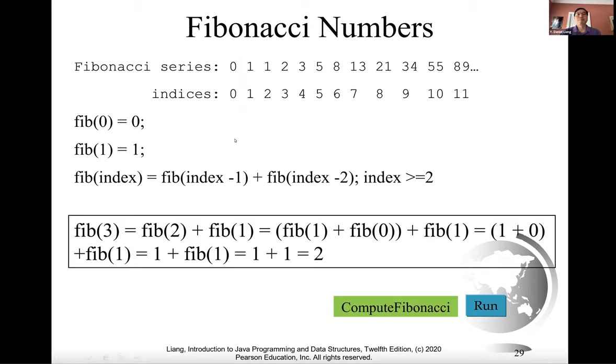Fibonacci numbers are defined using recursion as follows. For the Fibonacci number at index 0, the number is 0. And for the number at index 1, it is 1. And for the Fibonacci number at a given index, the Fibonacci number is the previous two: fib(index - 1) plus fib(index - 2).